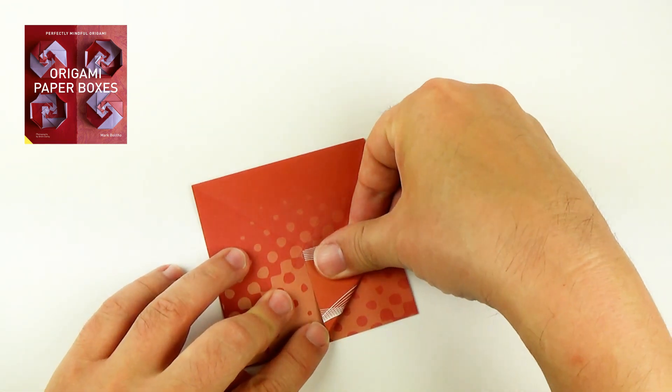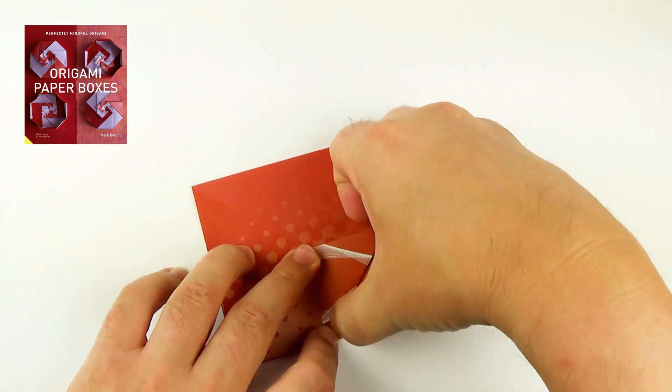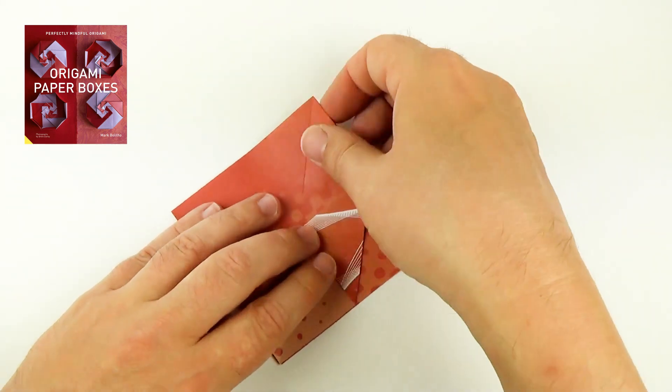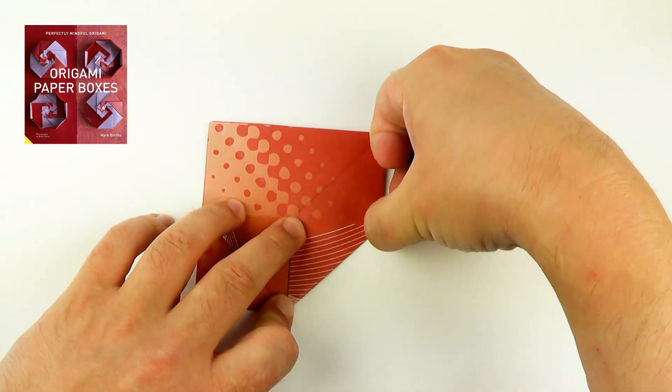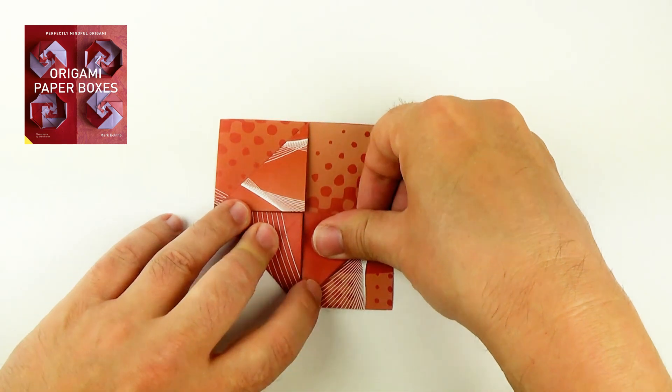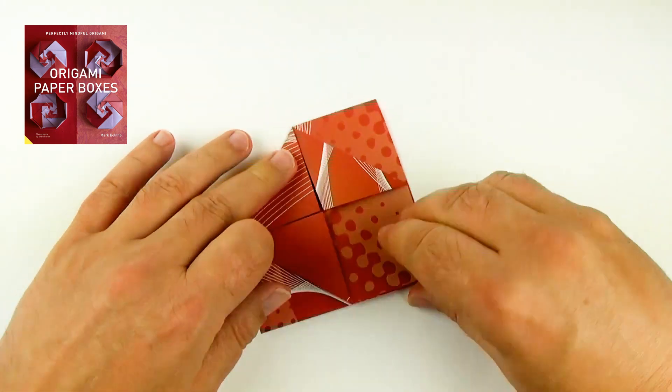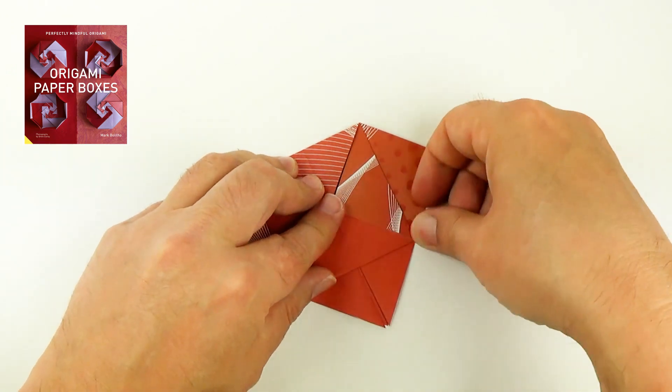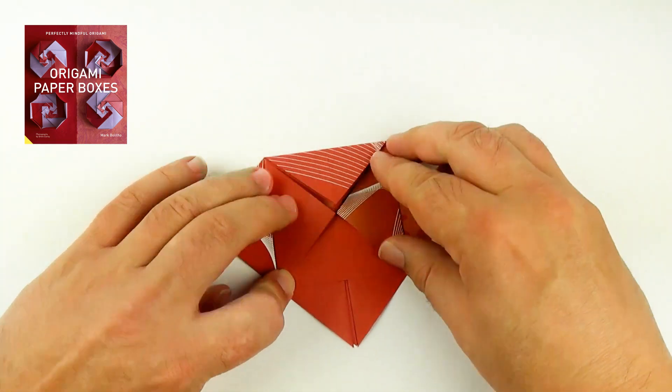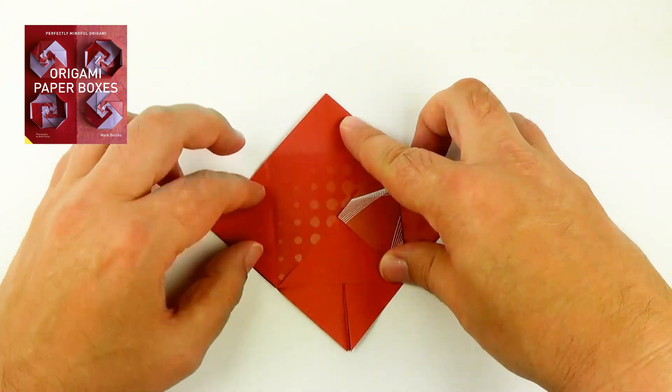Now I'm going to fold the corner in to the junction of this crease and the crease we made previously. So it's going to the middle of the section, and putting all of the corners in. So all of those are folding to the middle. It's another square. Then unfold.